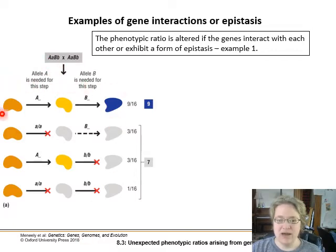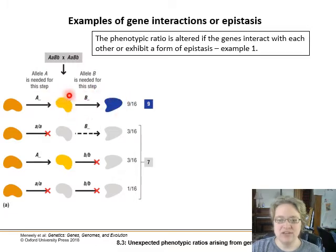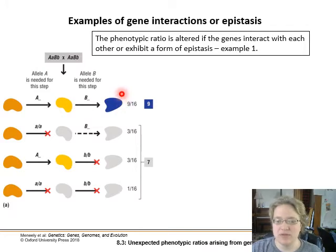In this example we've got a biochemical pathway. We need one enzyme to convert — for shortness — our orange to yellow. We need allele A of our first-step gene, and then we need allele B for the second step. The dominant alleles are the functional enzymes: dominant allele A converts orange to yellow, and dominant allele B converts yellow to blue, our final pigment form.